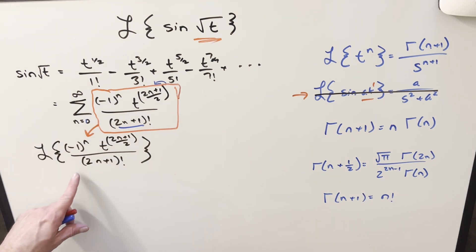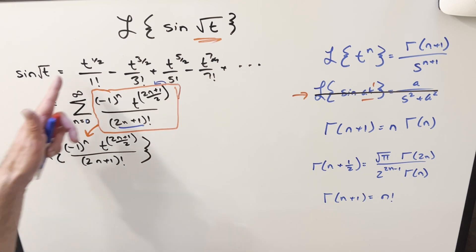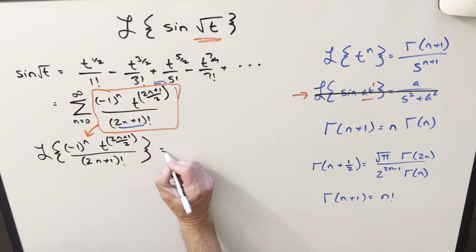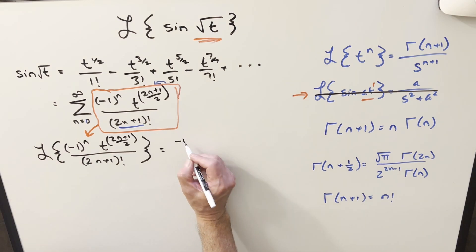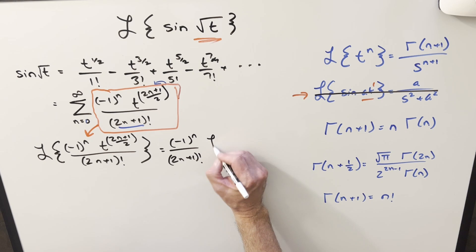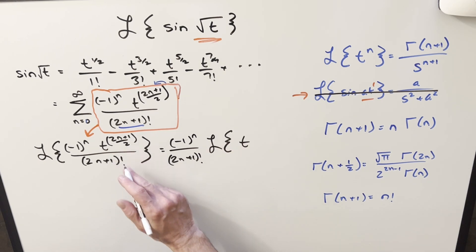Okay. Now from here, just focusing on doing the Laplace transform of some generic term in this series. First, minus 1 to the n, 2n plus 1 factorial. This is going to be a constant, like I said, that we can bring outside of the Laplace transform. And then what we're doing, we're just taking the Laplace transform of t to the 2n plus 1 over 2.